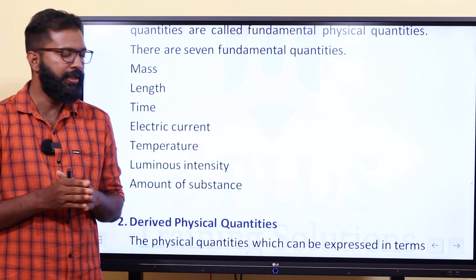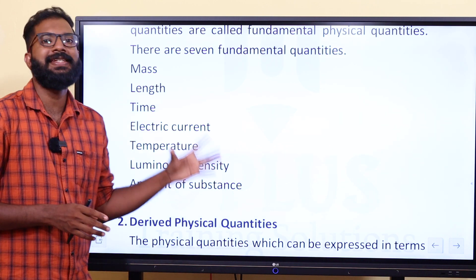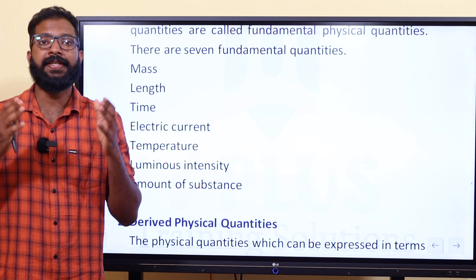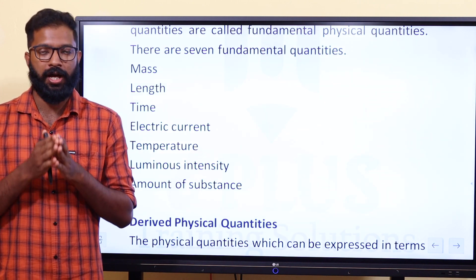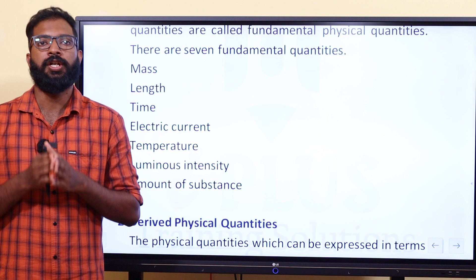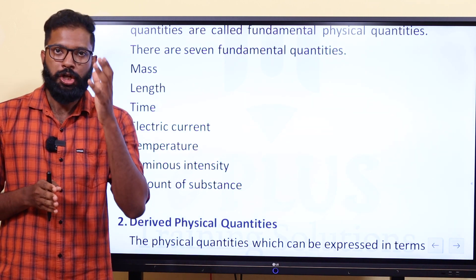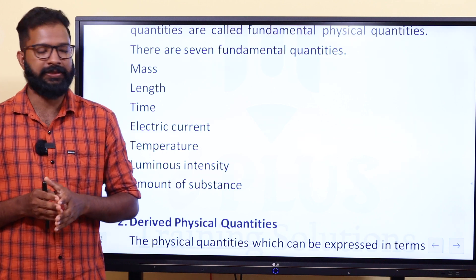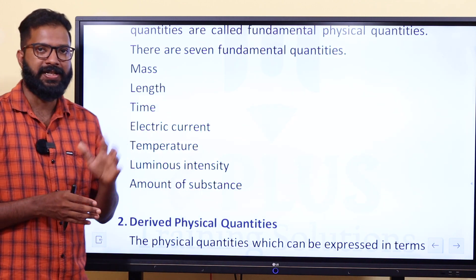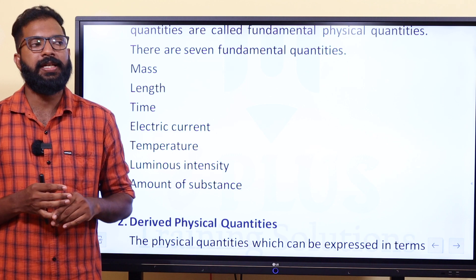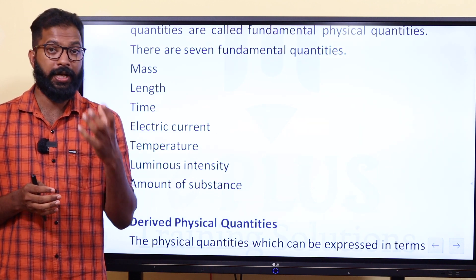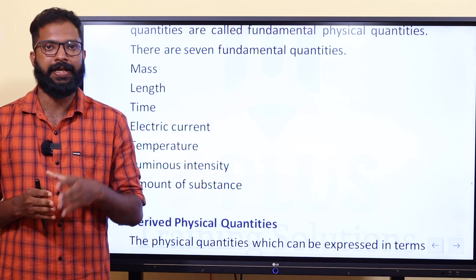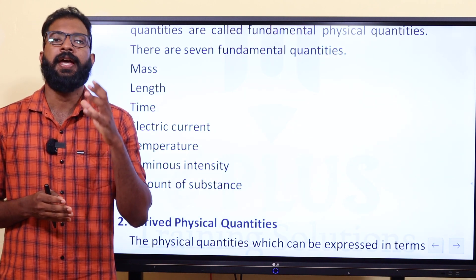Number five is temperature. Number six is luminous intensity — the light intensity is an important fundamental quantity. Number seven is amount of substance, which relates to chemical elements. The amount of substance is measured in moles.